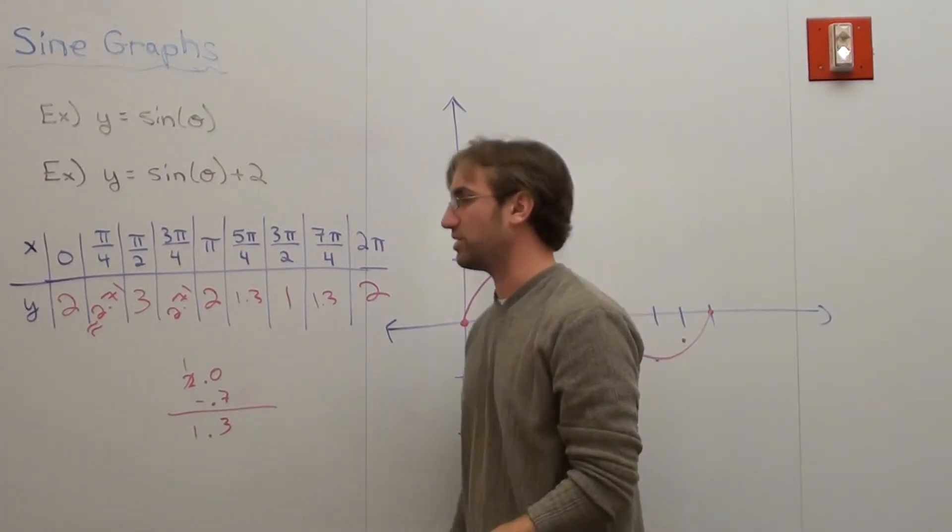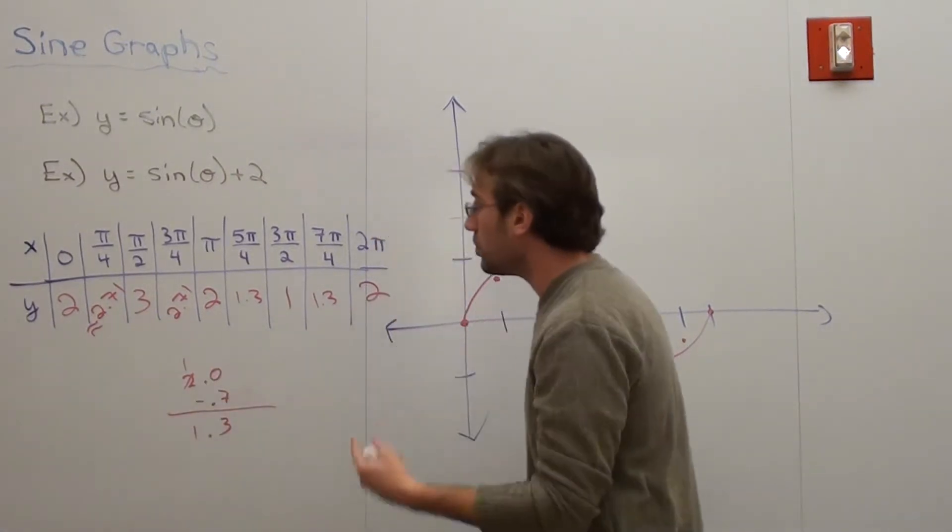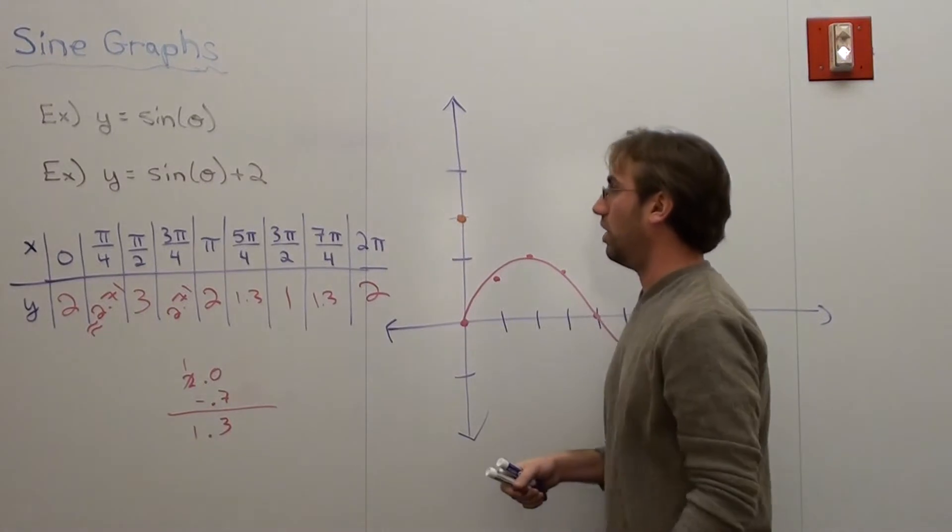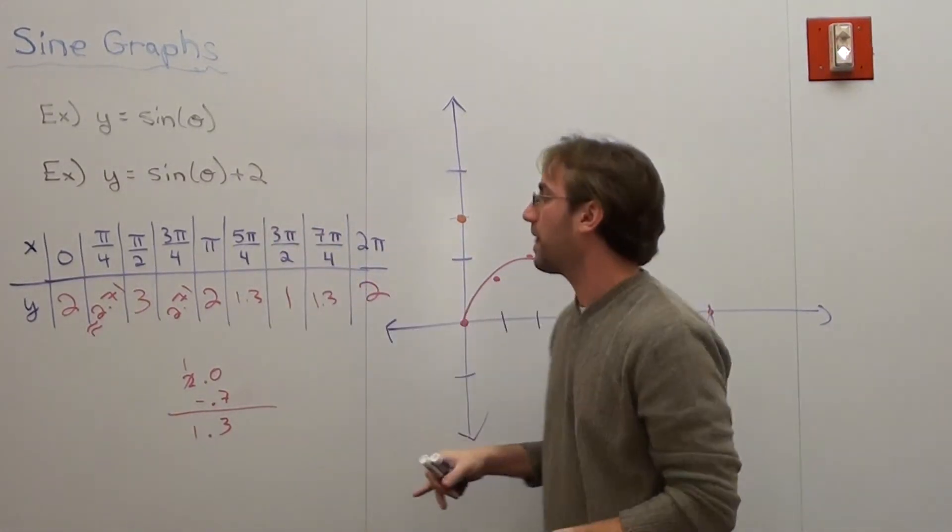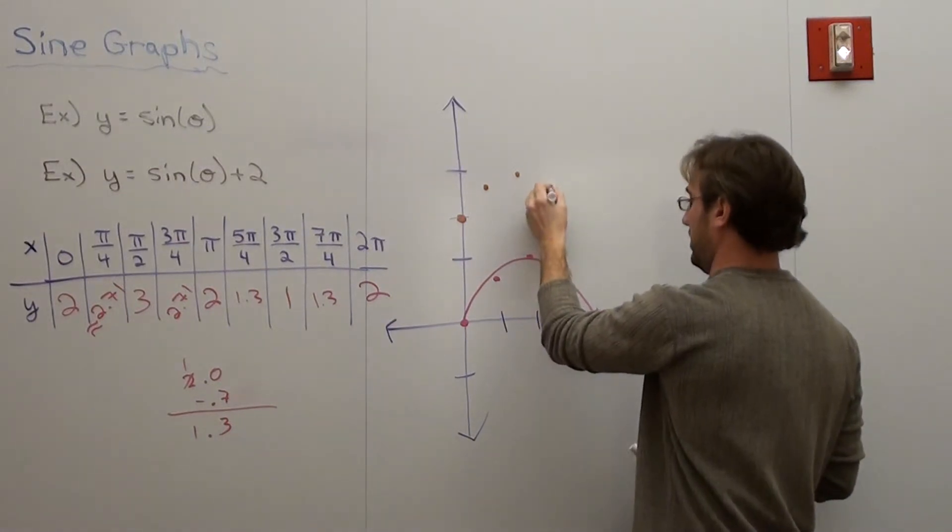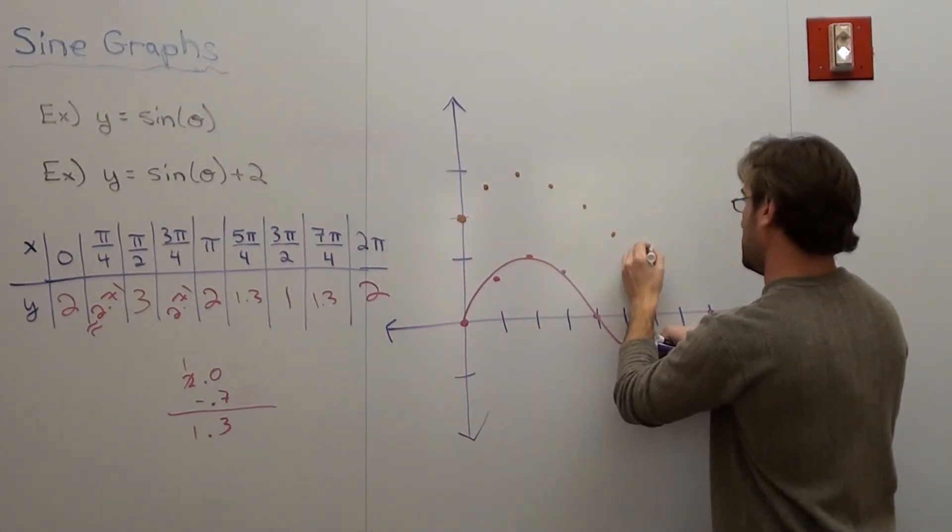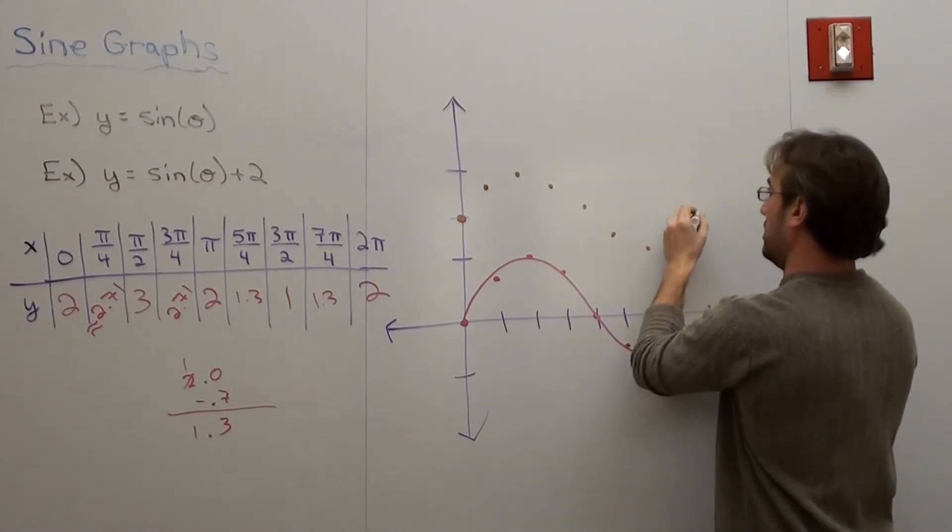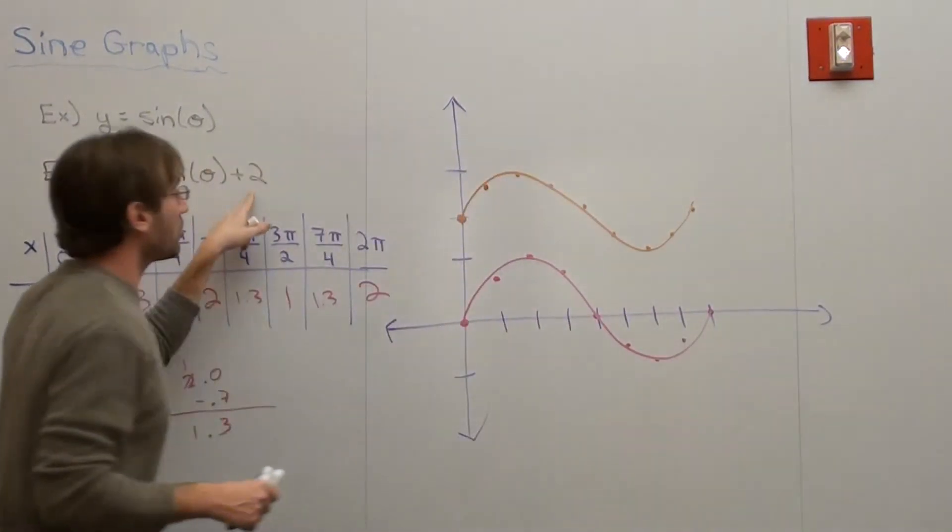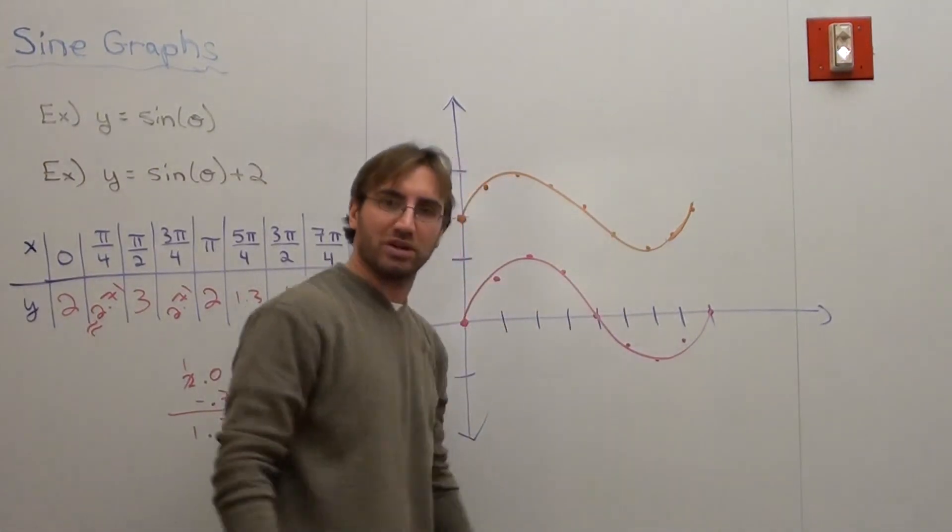So when I graph this, and I'm going to have to do this in a different color so it actually makes sense, 0 and 2 is right here. So this is going to really change my graph. Pi over 4 and 2.71 is like right there. That's 3. And that's 1.3 and 1 and 1.3 and 2. So that's the new graph. It wasn't drawn as perfectly as I'd like it to be, but the vertical shift was 2. So basically what I did was I took this graph and I just moved it up two spots.